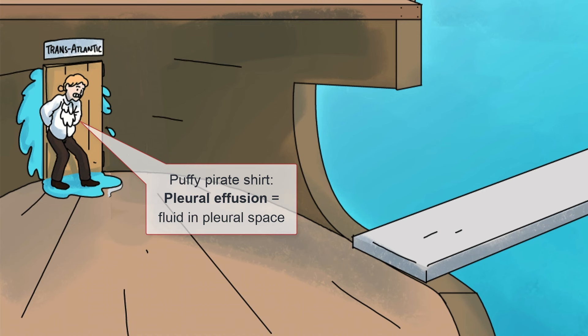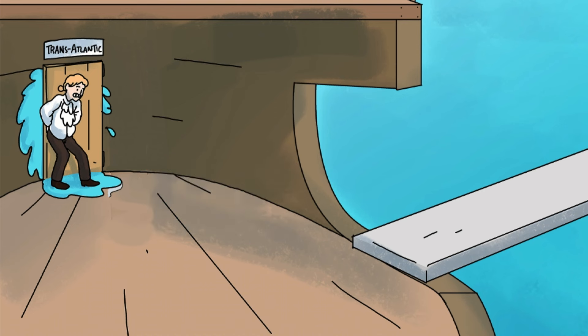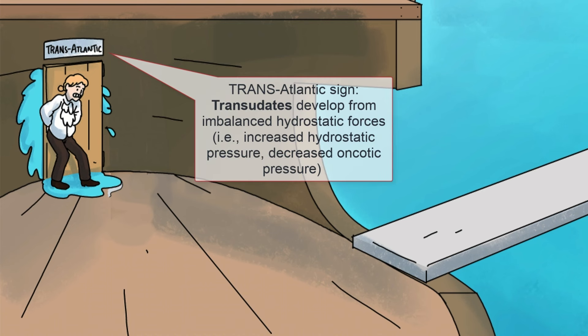One of the most common ways to organize the different pleural effusions we'll cover in this sketch is by the characteristics of the fluid that's produced. Specifically, we can categorize the pleural fluid into transudates and exudates. Transudates are caused by an imbalance in hydrostatic and oncotic pressures in the chest, resulting in fluid accumulating in the pleural space.